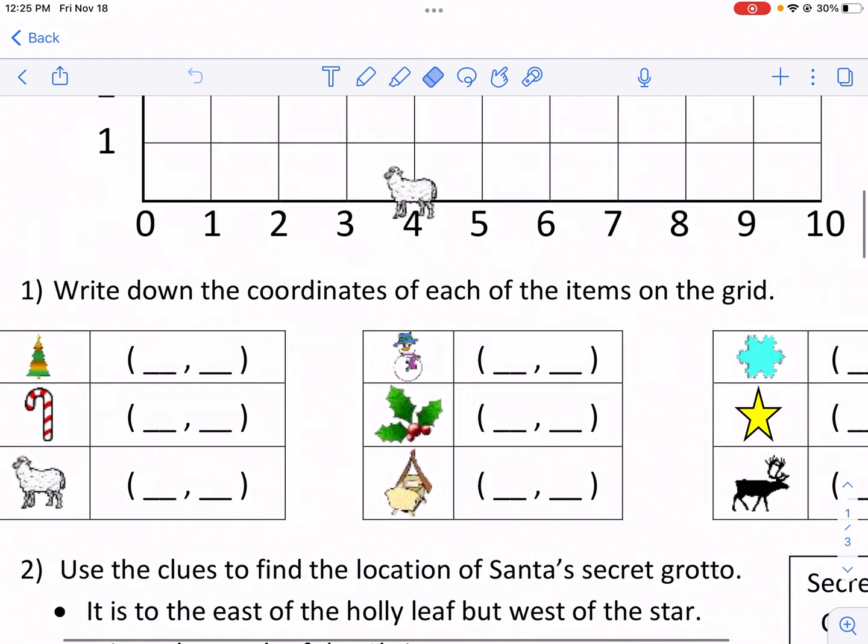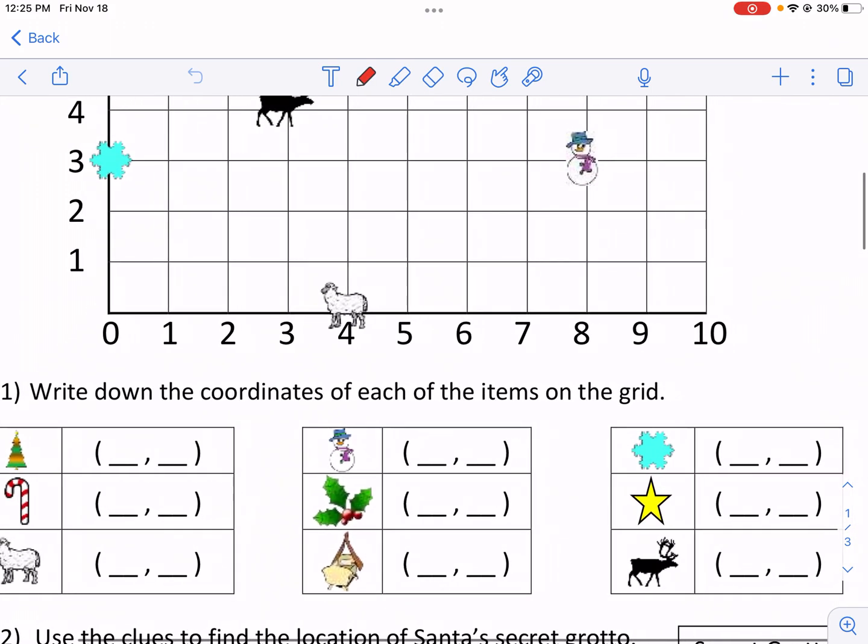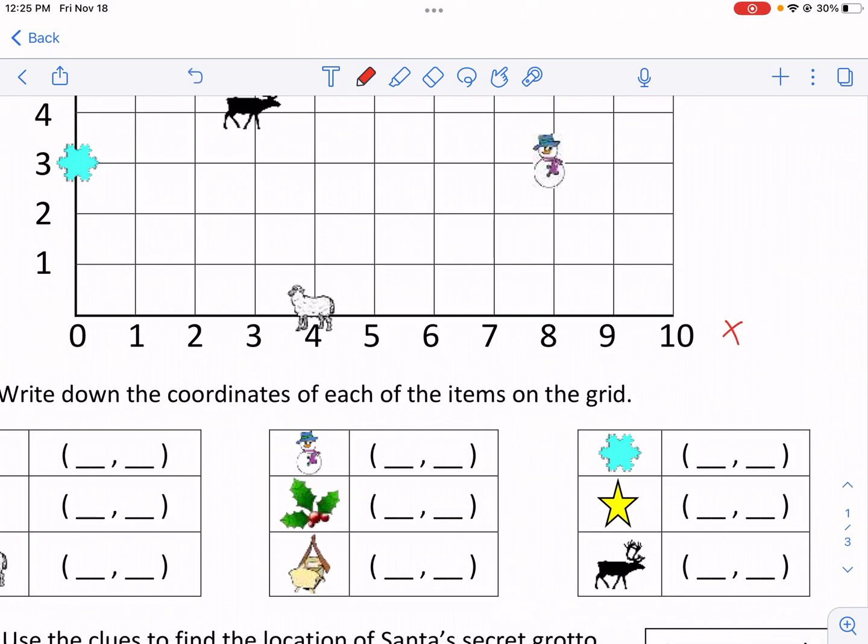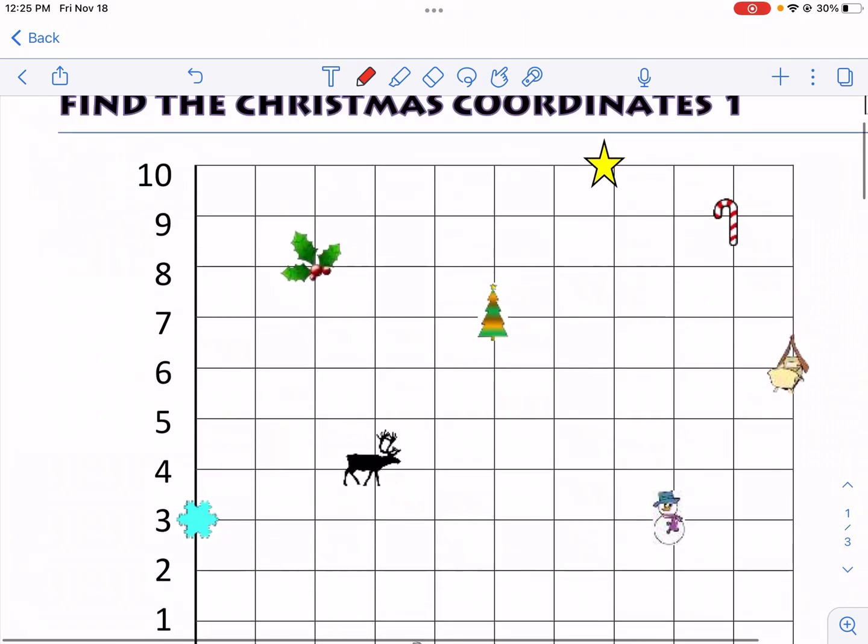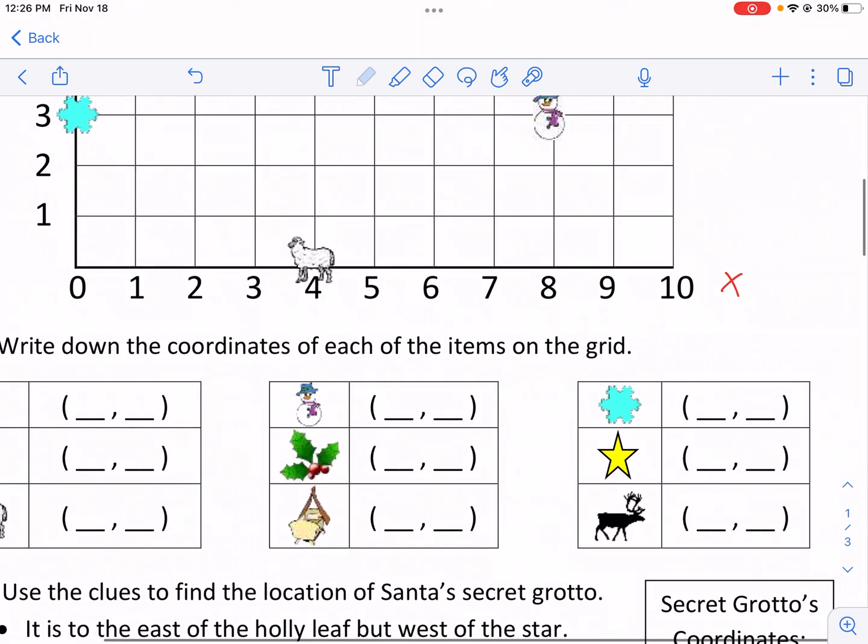Number one, write down the coordinates of each of the items on the grid. Now you're probably going to wonder, we've got two spots here, which one goes where? So this is technically what's called your x-axis, and axis just means like a vertical line or a horizontal line. And this one is your y-axis, that's your vertical. So y controls the up and down, and the x controls the left and right.